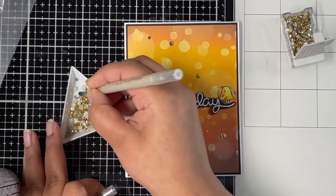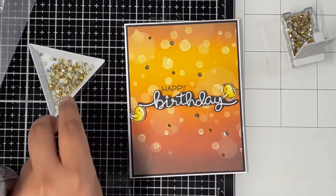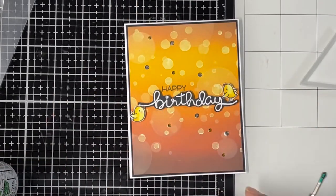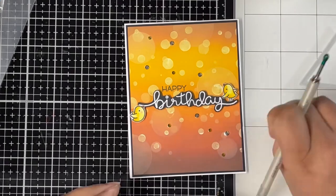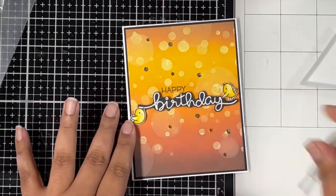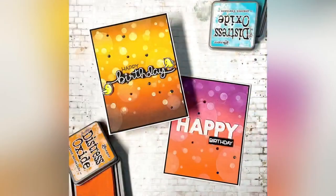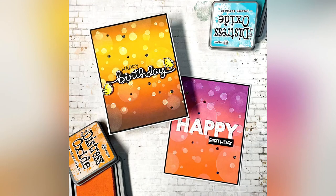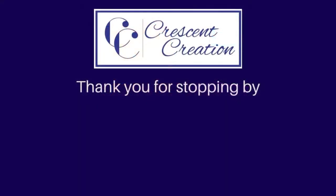That finishes my two card projects for today, showing you how to create the bokeh effect on your background using the two new bubble stencils from Lawn Fawn. I hope you enjoyed this video and will give this technique a try. If you do, don't forget to tag me on social media using the hashtag Crescent Creation. Don't forget to like this video and subscribe to my channel for more crafty videos. Comment and let me know which card was your favorite. Thank you for visiting, have a nice day.